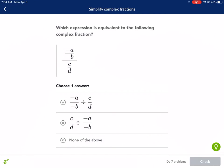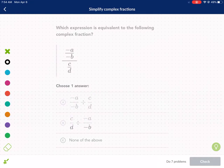Which expression is equivalent to the following complex fraction? We have negative a over negative b divided by c over d. Notice how I said that - I said divided by instead of a fraction. A lot of people get tripped up because they don't see that it's a fraction over a fraction. They just see a lot of lines and then they get confused and then they guess because they're not sure which one.